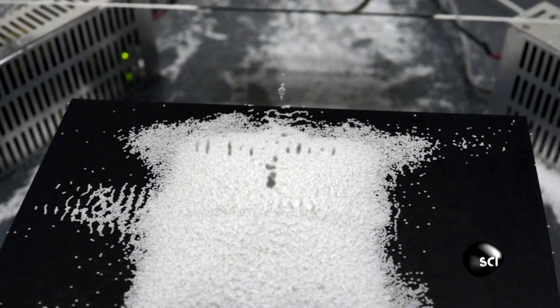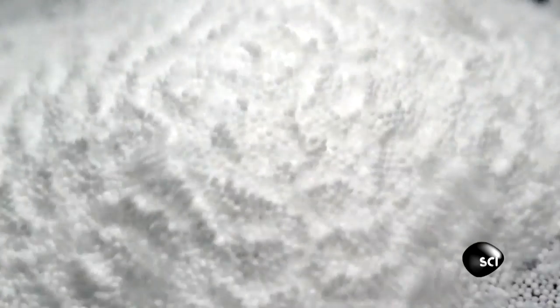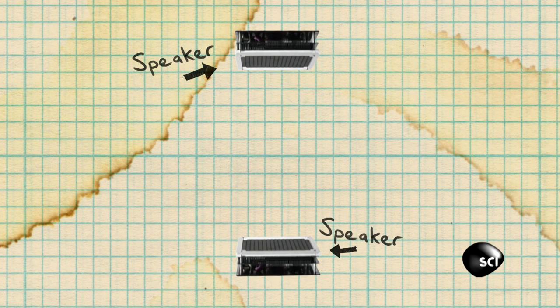These guys are manipulating these small objects by using high frequency ultrasound waves which we cannot hear. Sound actually travels through the air as a wave in a series of high pressure and low pressure areas. To levitate something, you need to create a standing wave.